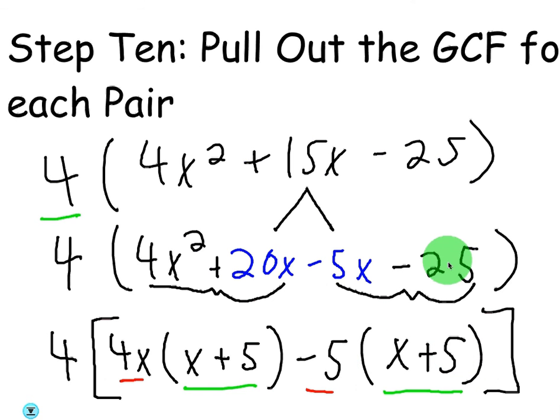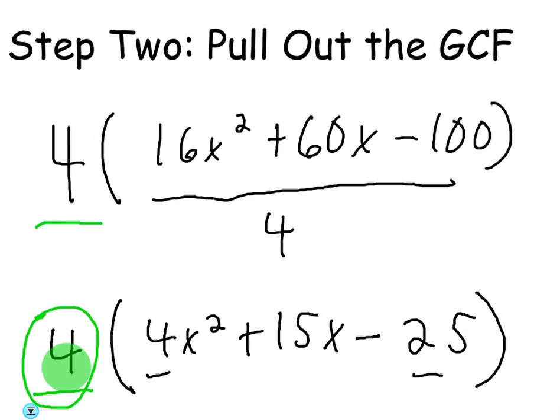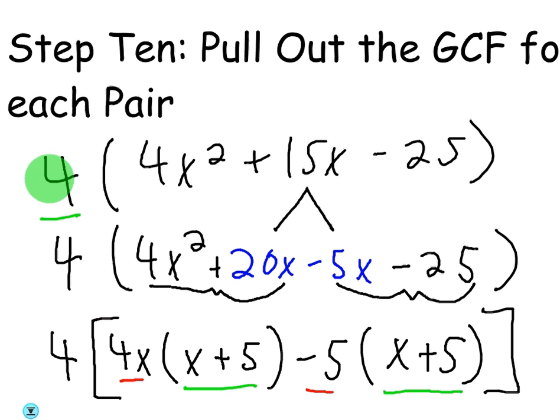And we did it right because we got the same thing in the parentheses, right? And yeah, like you said, the 4 does carry down. That original 4 that we pulled out in this step carries down. You can't forget that because it's going to be part of your factorization. It just doesn't affect the actual x method. You just pull it down.